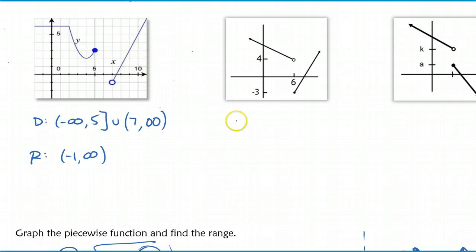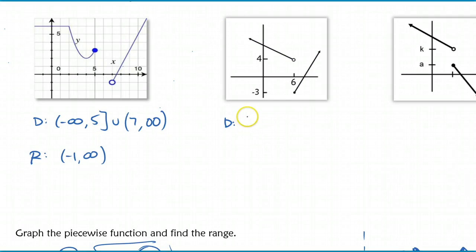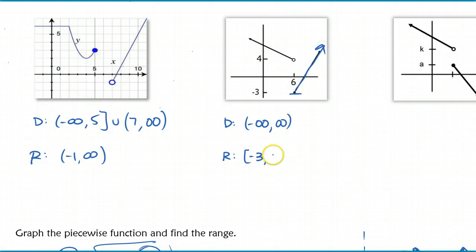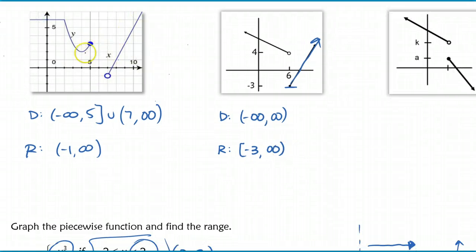In the next example, the domain covers all reals - going from negative infinity all the way through, even jumping to another piece, every single x value is within the domain. So it's just from negative infinity to positive infinity. For the range, I do have a low point at negative 3, so the range is negative 3 all the way to positive infinity. This is the same kind of problem as the first example since the graph goes to positive infinity.